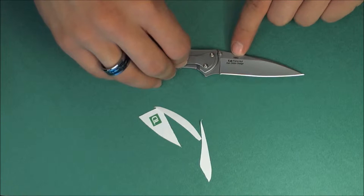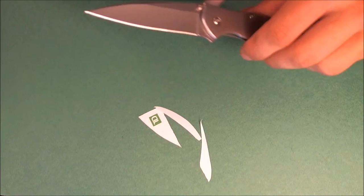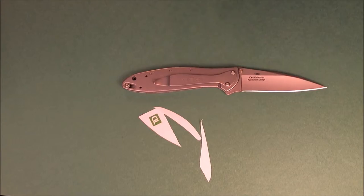Now, you've got nice, kind of minimalistic labeling. You've just got KAI, which is the parent company for Kershaw. Ken Onion Design, 1660, which is the model number. Nothing on this side. You've got Kershaw SpeedSafe down here. So, subtle logo placement. Nothing too in your face, but just enough to get the brand out there.